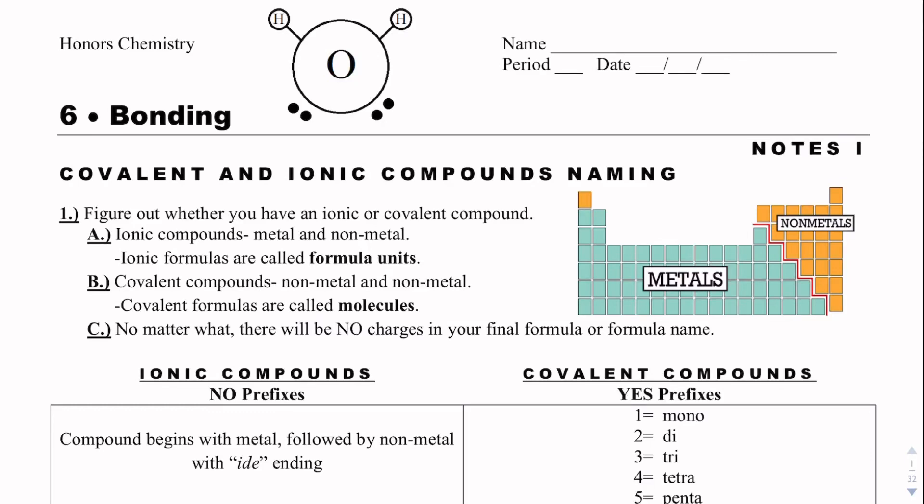Hello, Honors Chemistry students. In this video, we are going to cover Notes 1 of Unit 6, which is covering bonding. We are going to talk about naming ionic and covalent compounds.